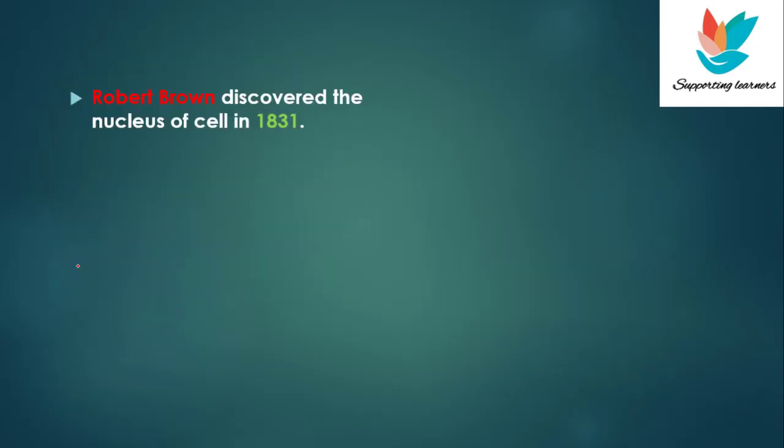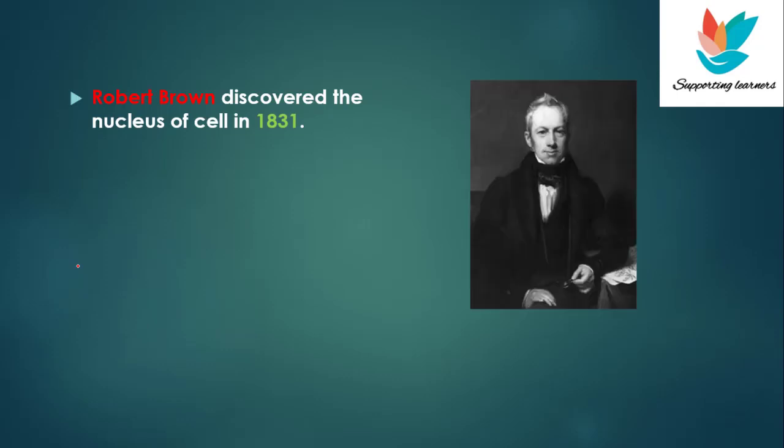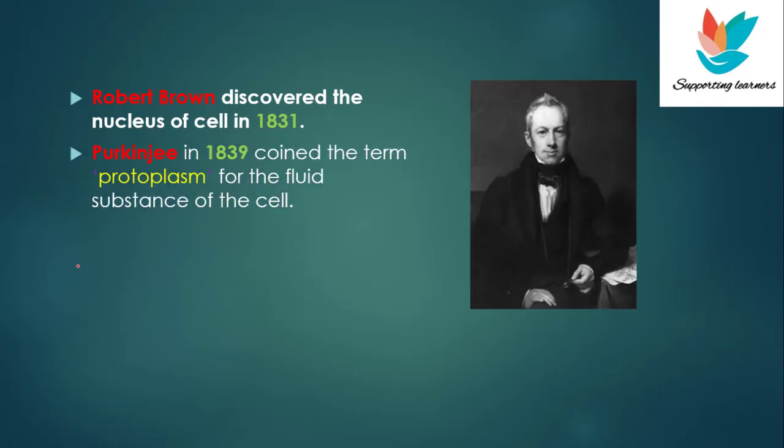After the discovery of the cell, the nucleus was discovered many years later by Robert Brown. And Purkinje in 1839 coined the term 'protoplasm' for the fluid substance present in the cell. Protoplasm is a colorless material consisting of the cytoplasm, the nucleus, and the organelles. This term protoplasm was coined by Purkinje, and this is also asked in many exams.